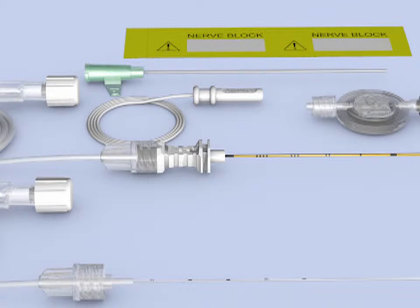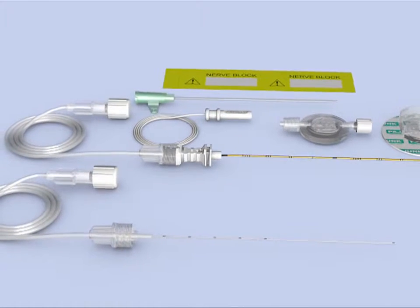Welcome to the Pajunk E-Cath, a revolutionary system for continuous peripheral nerve blockade that makes inserting an indwelling nerve catheter as easy as a single shot technique.